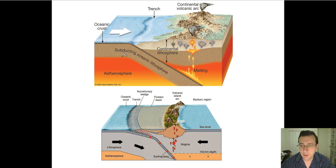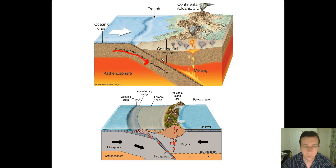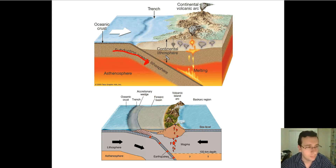In the convergent boundary between an ocean and a continent, the subducting plate will always be the oceanic plate, because it is denser, made of mantle-like materials. Since it's newer, it's going to be basalt-like igneous rock, rich in magnesium. Continents have several different types of composition, more rich in silicon and oxygen. Even though the continental crust is thicker, it is lighter and will stay on top.